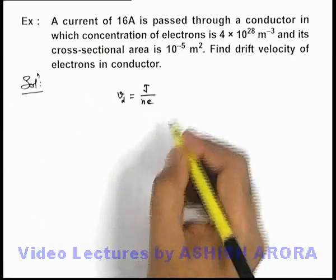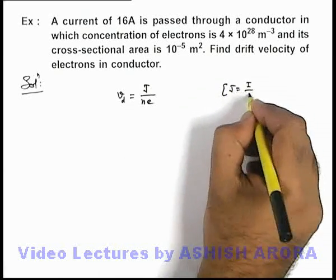Where j is the current density, we can write current density as i by s.